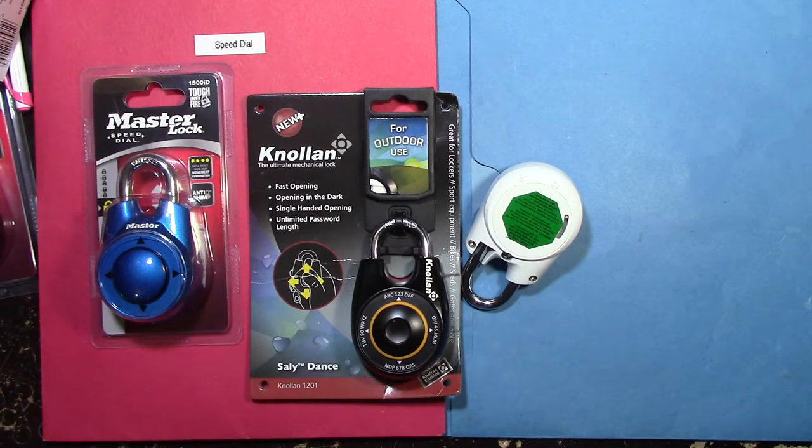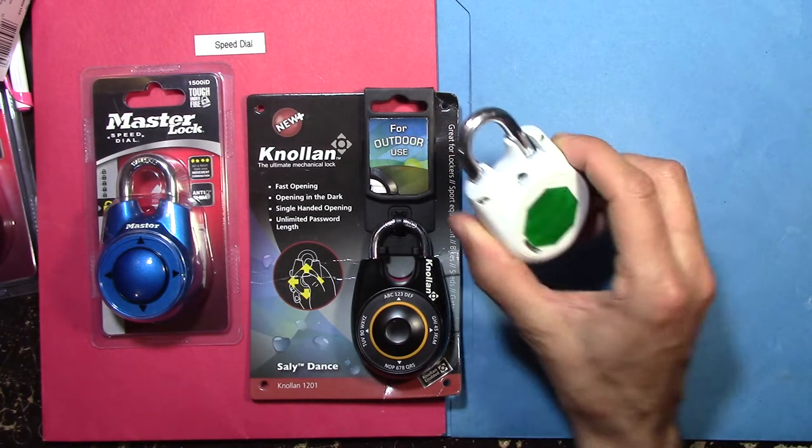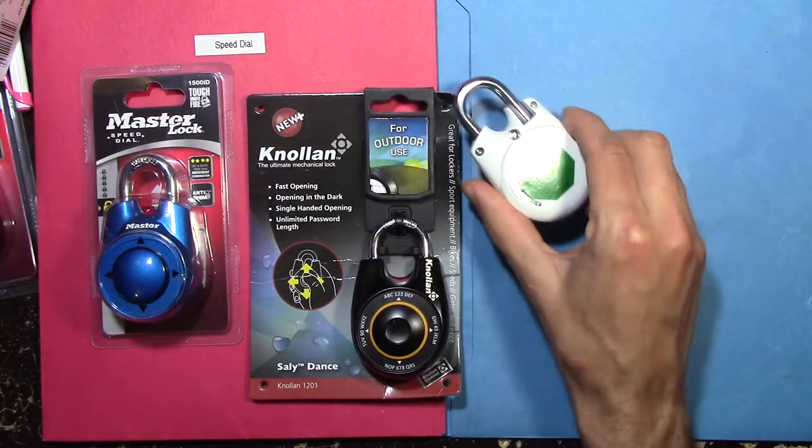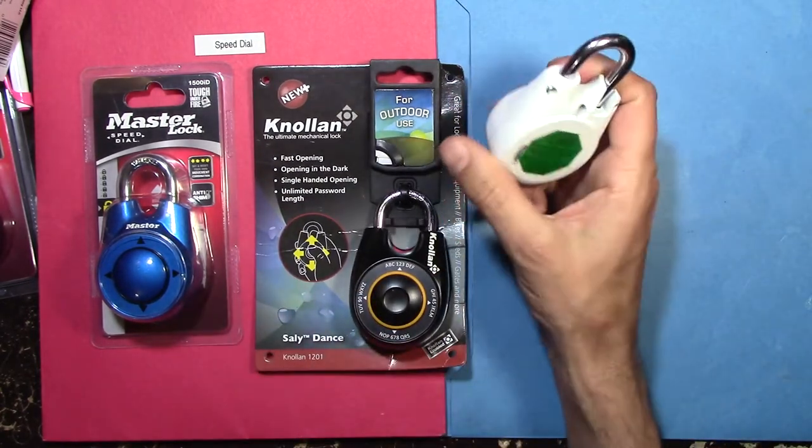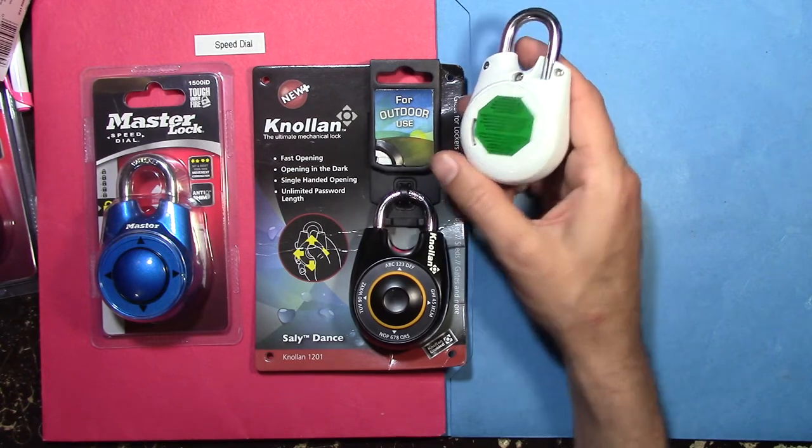I want to share how I attack Master Lock Speed Dial style locks, including locks like this Nolan, when I know they have a factory code.